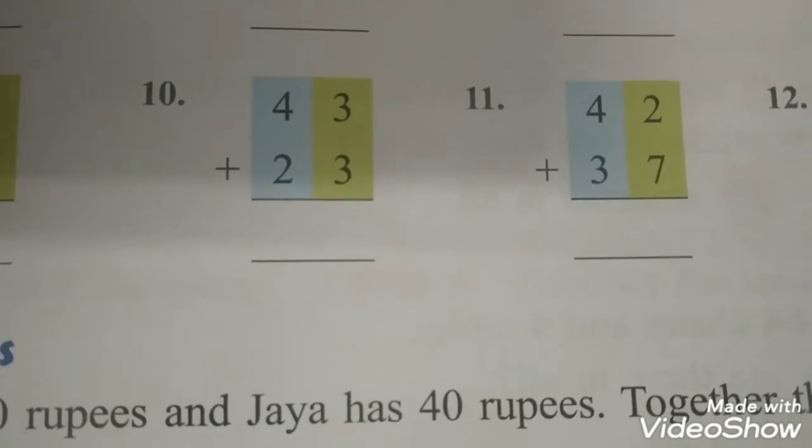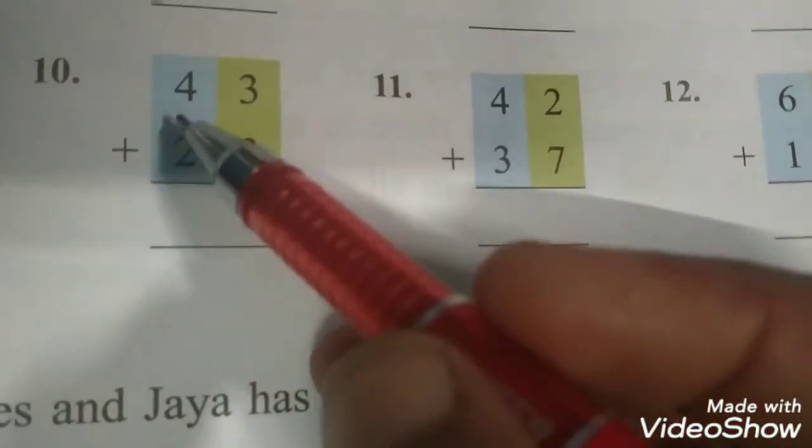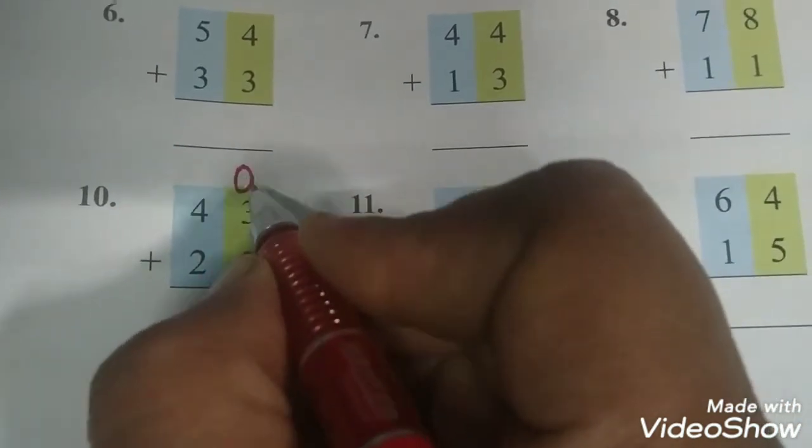Now beta, we will see how do we solve 2-digit addition sums. Like here I am having 43 plus 23. 2-digit hai, to kaise karenge? Whenever you do that, always remember jaise maine aapko bataya, idhar wala digit jo hai, vo hamara hai ones, to I am writing O over here. O means ones. And idhar wala digit hai, that is tens, so I am writing T over here.